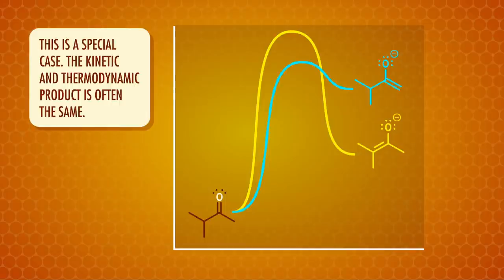So we have one enolate that's lower in energy but forms more slowly, and one that's higher in energy but forms more quickly. Which one we get depends on the reaction conditions. At low temperatures, we don't have enough energy to get over the larger energy barrier. But we can get over the smaller energy barrier for the quick-forming, less stable, higher-energy enolate, the kinetic product. At higher temperatures, there's enough energy to get over both energy barriers and to reverse the reaction. So over time, the slow-forming, more stable, lower-energy enolate forms, the thermodynamic product.